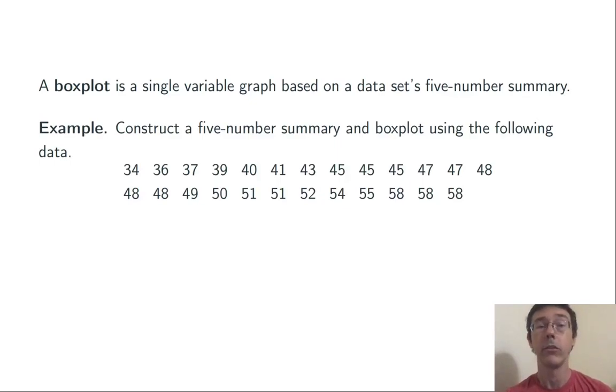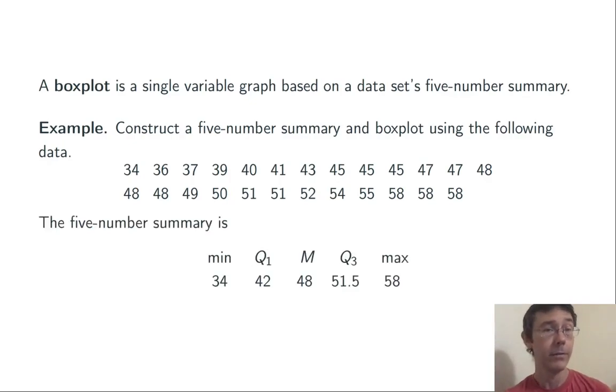Here we want to construct a five-number summary and a box plot for this data set. Here's the five-number summary. Obviously the min is 34 and the max is 58. I've already got the numbers arranged from lowest to highest, so the median is the one in the middle. Here we have an odd number of values. There literally is one in the middle, 48.